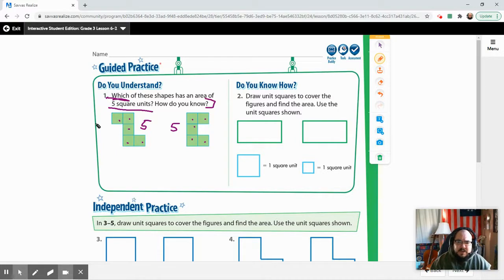Now let's take a look at this one. Draw unit squares to cover the figures and find the area. Use the unit squares shown below. These are the same figure, the same shape. The unit squares are different. This is our small standard size. This is a bigger one. In this case, you're just going to draw a line straight down. I know it's kind of uneven looking, but really there are just two of these right here. That's all you can fit in there.